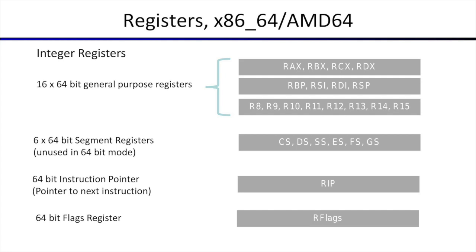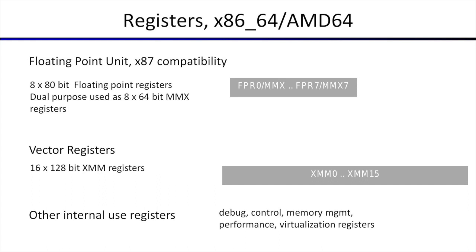There are additionally more registers. There is a floating point unit which comes with its own register set — eight 80-bit registers. The floating point unit is more for backward compatibility of code, because for more modern computations we have vector registers, which are 128-bit XMM registers — 16 of those. Vector registers provide a lot of arithmetic capability, doing calculations on multiple numbers together. There are also other internal registers not available for programming but used by the processing unit for debug, control, memory management, performance, and virtualization. We will use the general purpose register set.